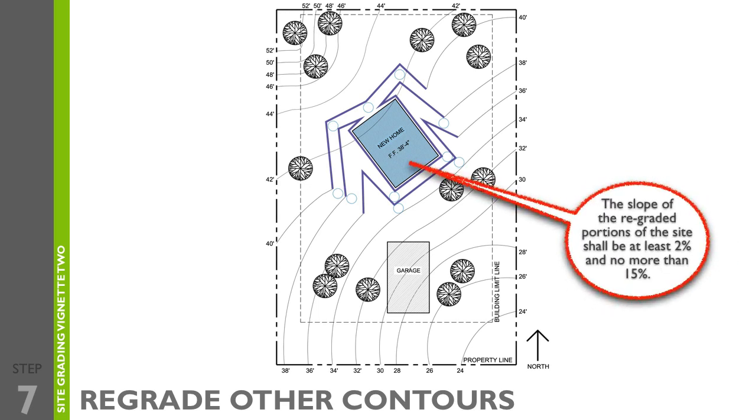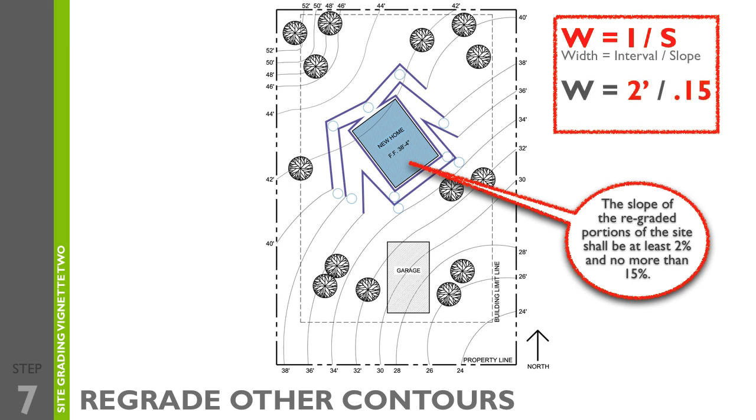For this vignette, the slope of the regraded portions of the site shall be at least 2% and no more than 15%. To calculate these numbers, use the formula from the study guide: width equals interval divided by slope. Here, the contour interval is 2 feet and the maximum slope is 15%, or 0.15, which equals 13.33 feet.